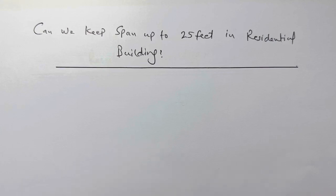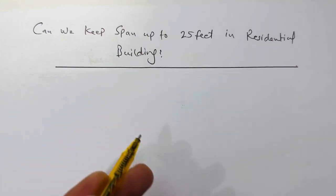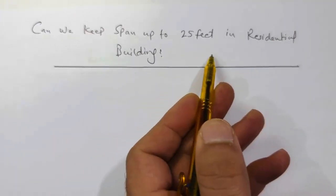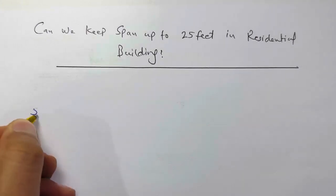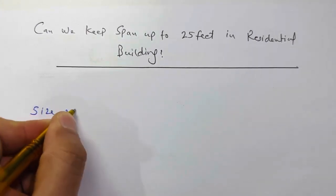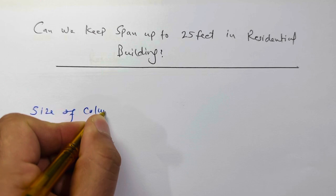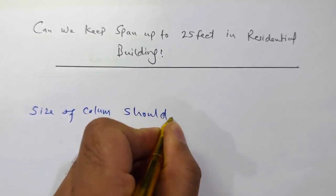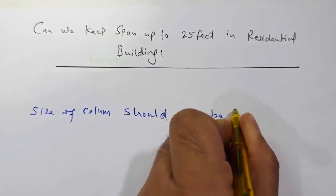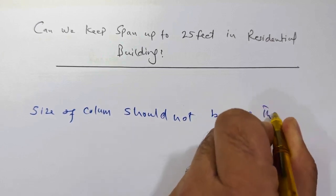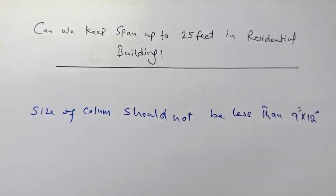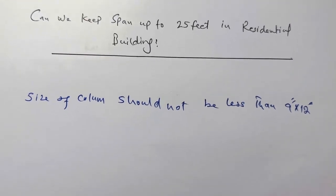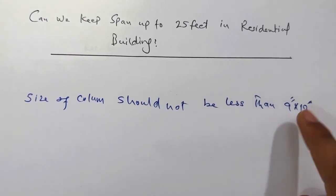Yes, of course we can build up to 25 feet span in residential building. But remember, for this, the size of column should not be less than 9 inches by 12 inches. In this case, if the span is up to 25 feet, so this is the minimum size.